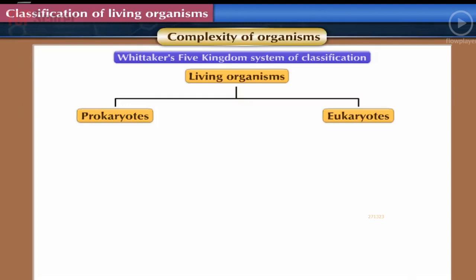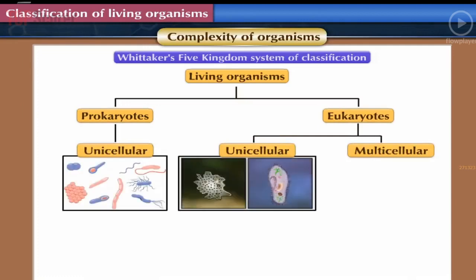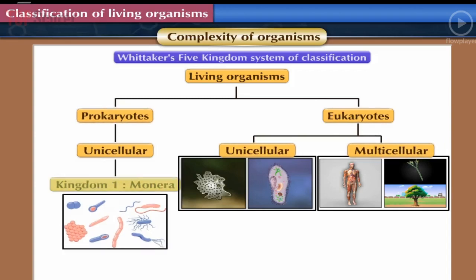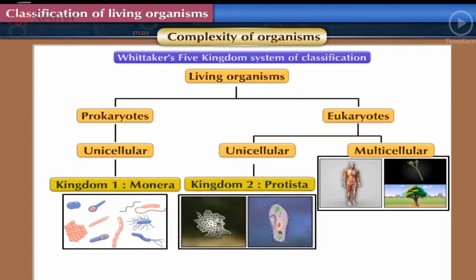Complexity of Organisms: Prokaryotes and Eukaryotes were further divided based on number of cells. Organisms made up of only one cell are unicellular, while those made up of more than one cell are multicellular. Since all prokaryotes are unicellular, they form only that group. Eukaryotes include both unicellular and multicellular organisms. Unicellular prokaryotes were classified into Kingdom Monera, and all unicellular eukaryotes into Kingdom Protista.